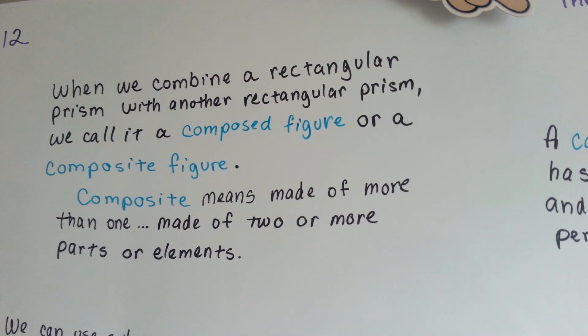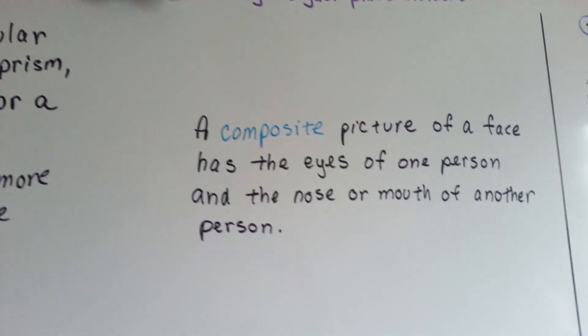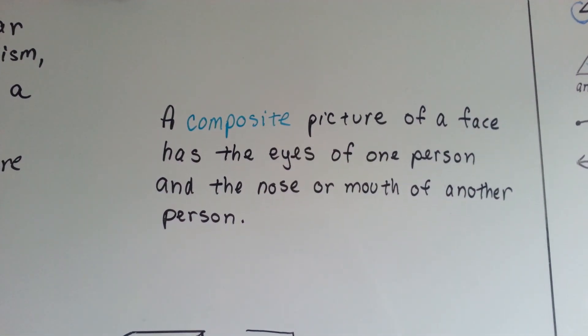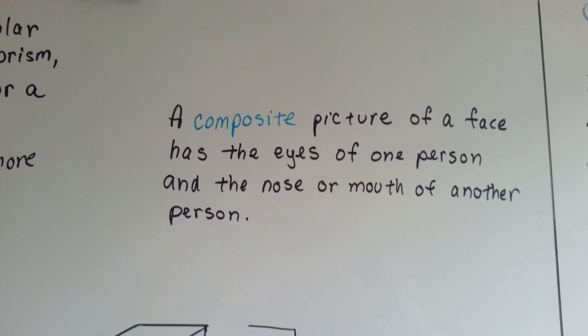Composite means made of more than one or made of two or more parts or elements. A composite picture of a face has the eyes of one person and the nose or mouth of another person. It could have the hair of one person and the face of another person.